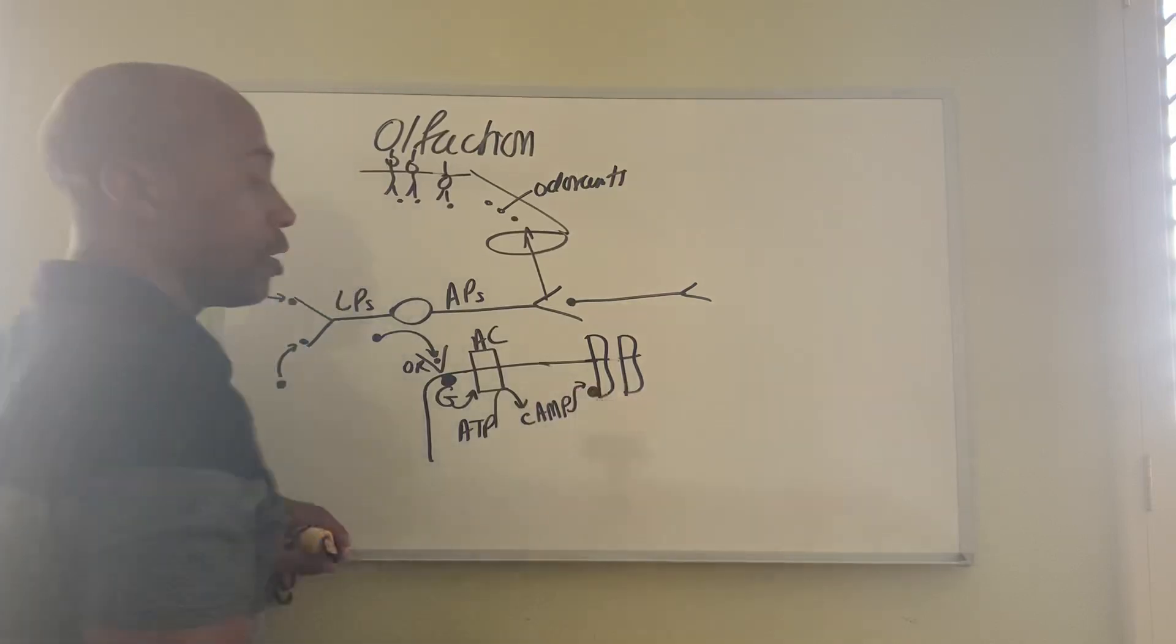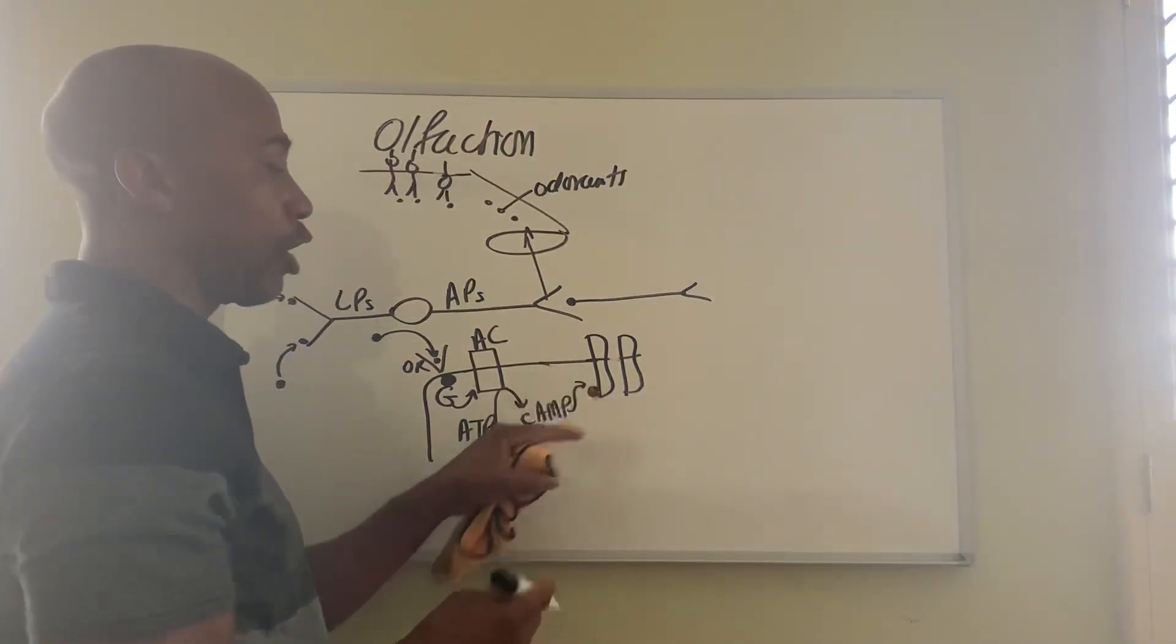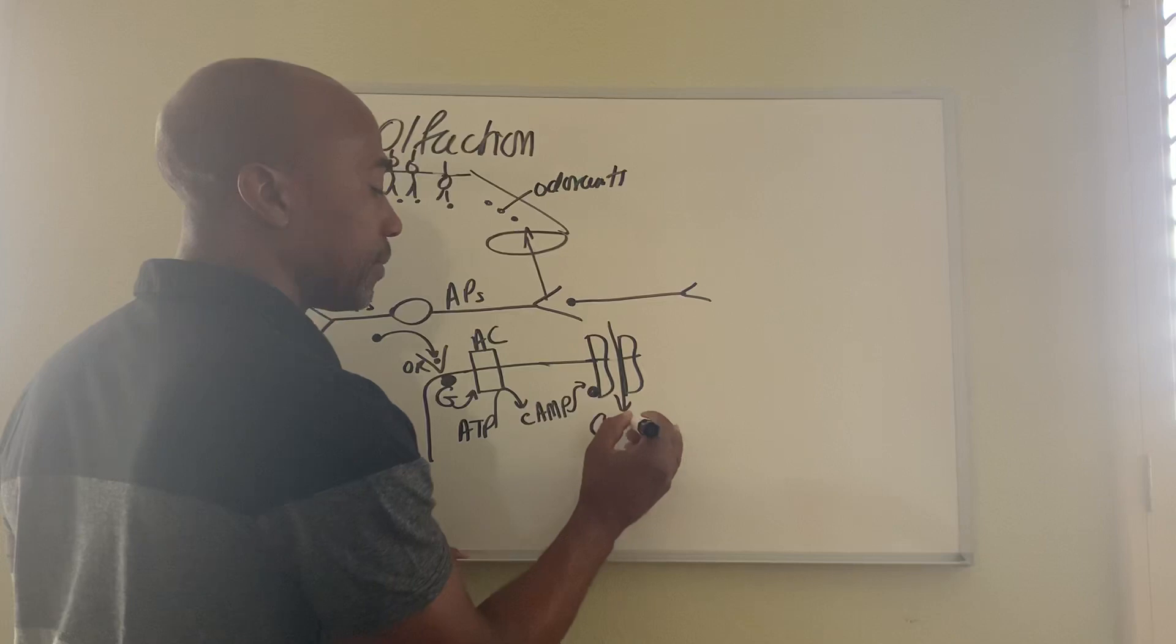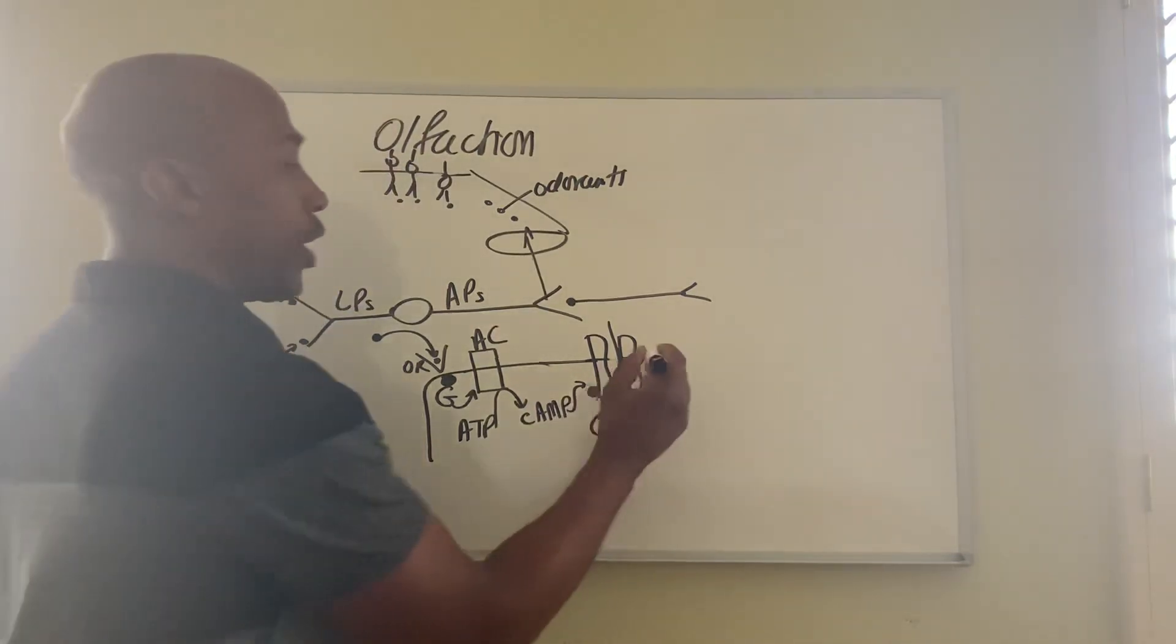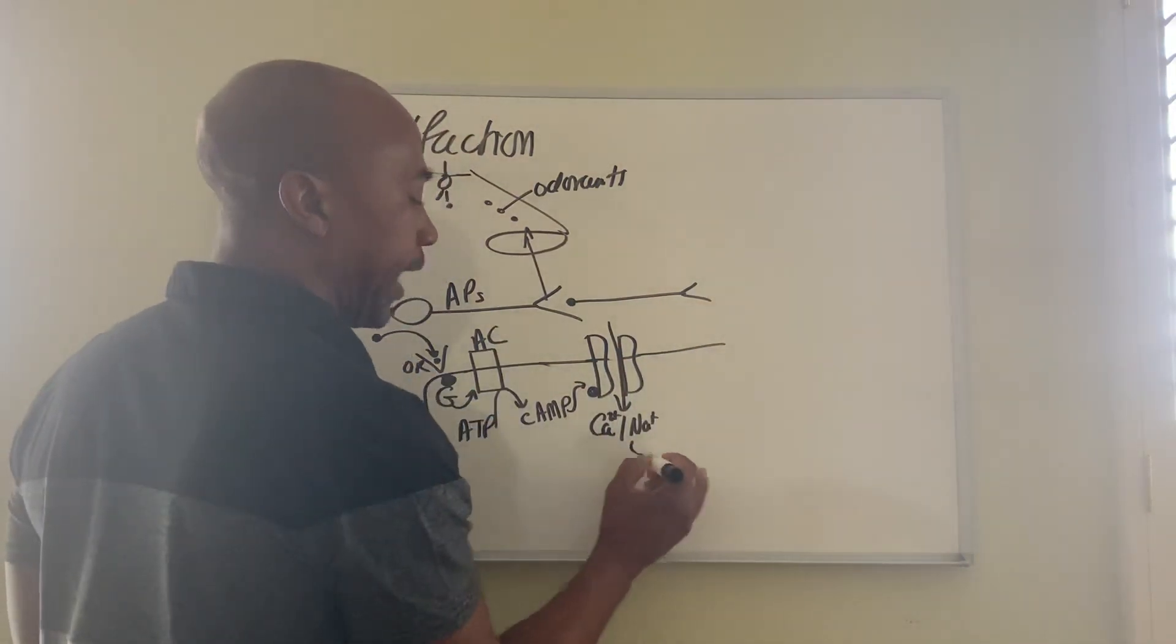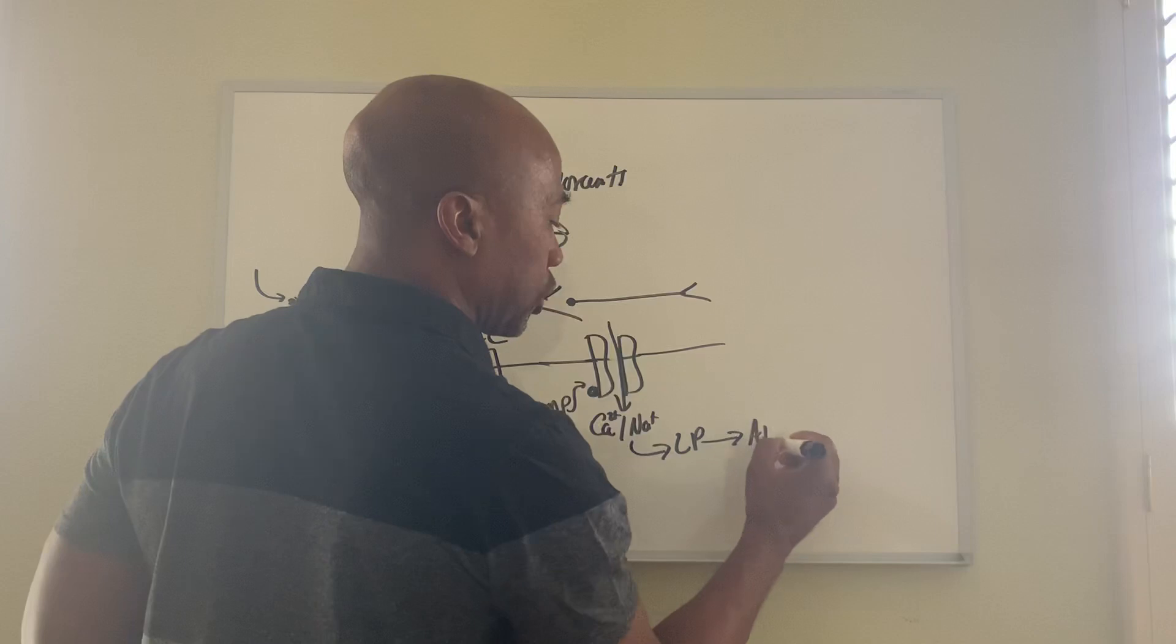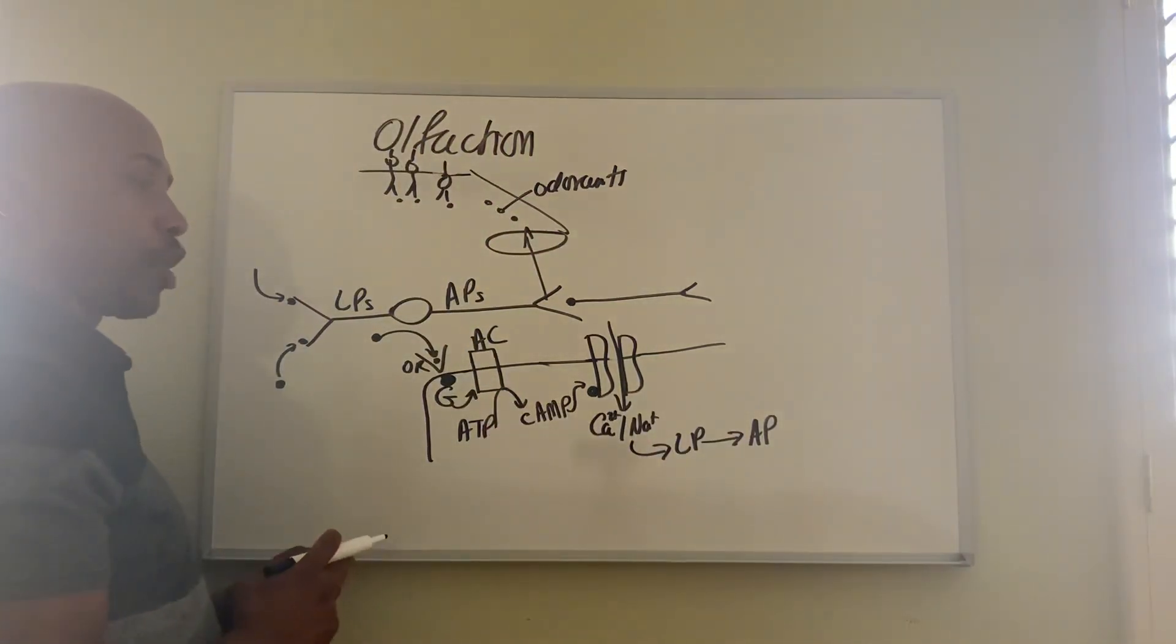Then cyclic AMP will bind to a gate, bind to a chemically gated channel, and the binding of cAMP to the channel will open the channel to let in calcium and sodium. And when those things enter the cell, they create the local potential.